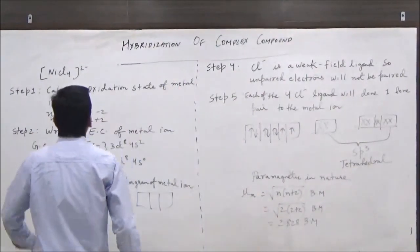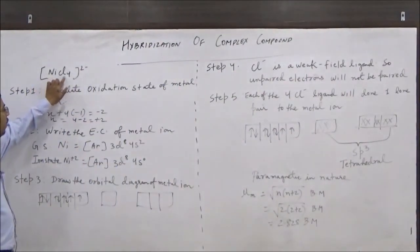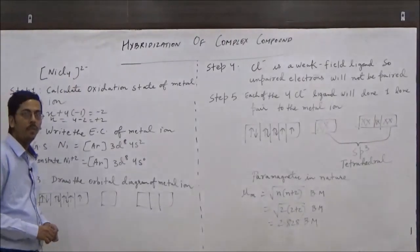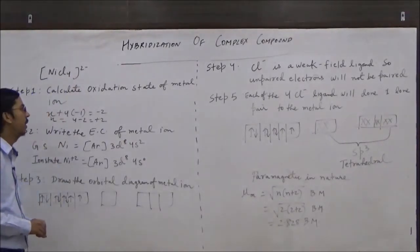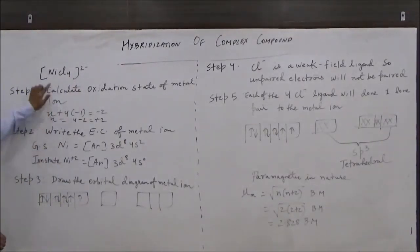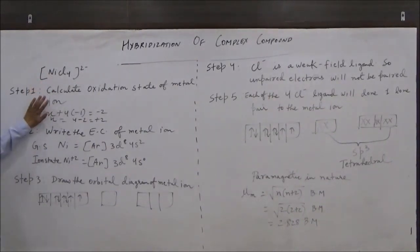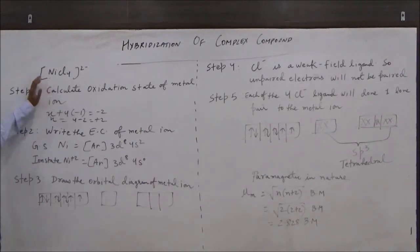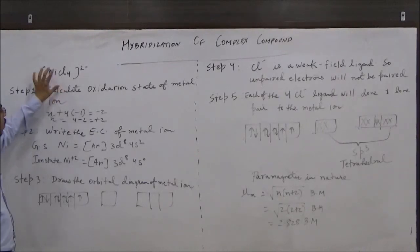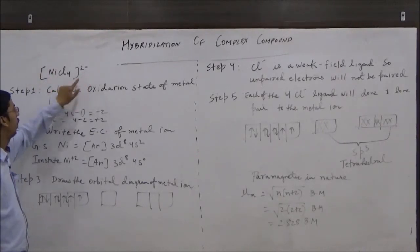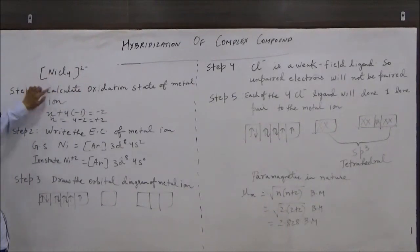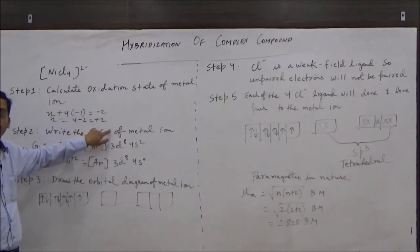Now we will look at another example of a complex ion, [NiCl4]²⁻. We will follow the same steps discussed in the earlier question. First, we identify the metal ion, which is nickel. Then we calculate the oxidation state of the metal ion. We know that the charge on chloride ion is −1 and the total charge on the complex is −2. Assuming the oxidation state of the metal ion to be x, the oxidation state of nickel comes out to be +2.